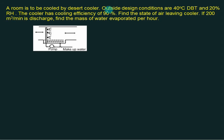A room is to be cooled by a desert cooler. The outside design conditions are 40 degrees and 20% RH. The cooler has an efficiency of 90%. Find the state of air leaving the cooler. If 200 cubic meters per minute is discharged, find the mass of water evaporated per hour.